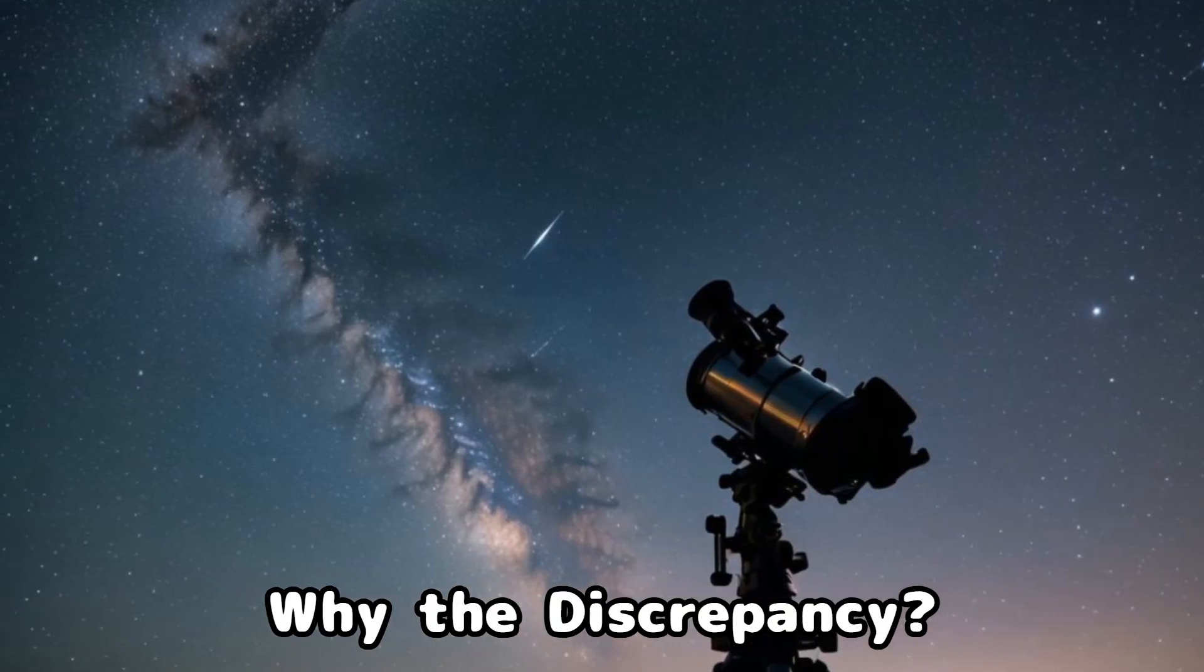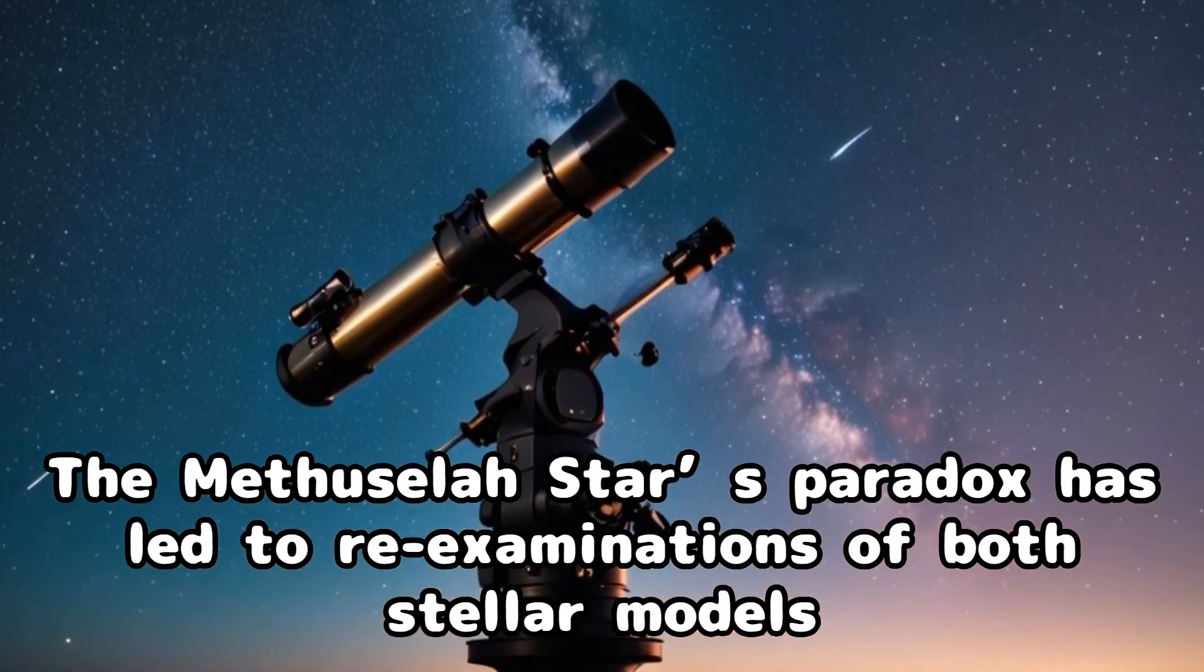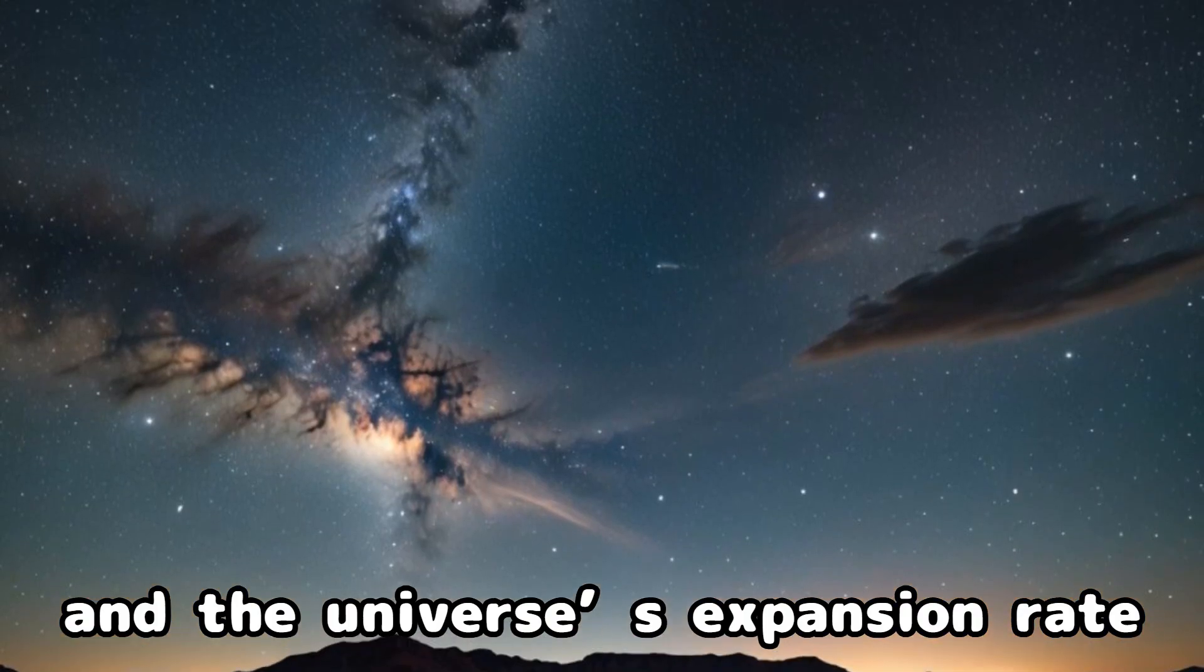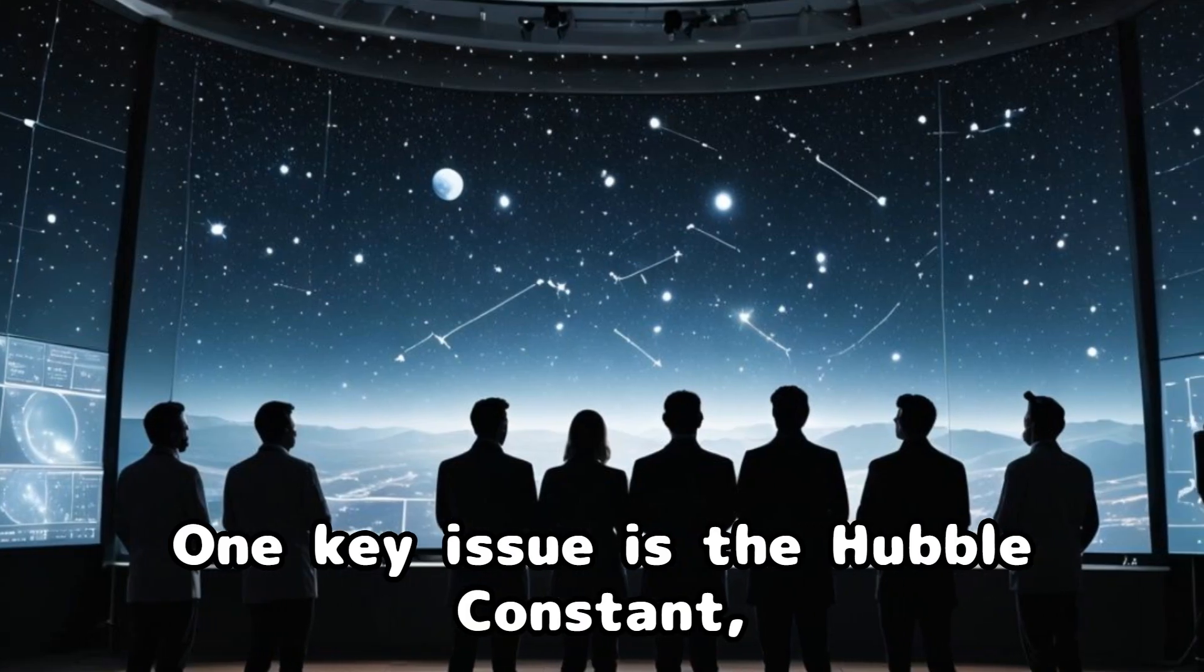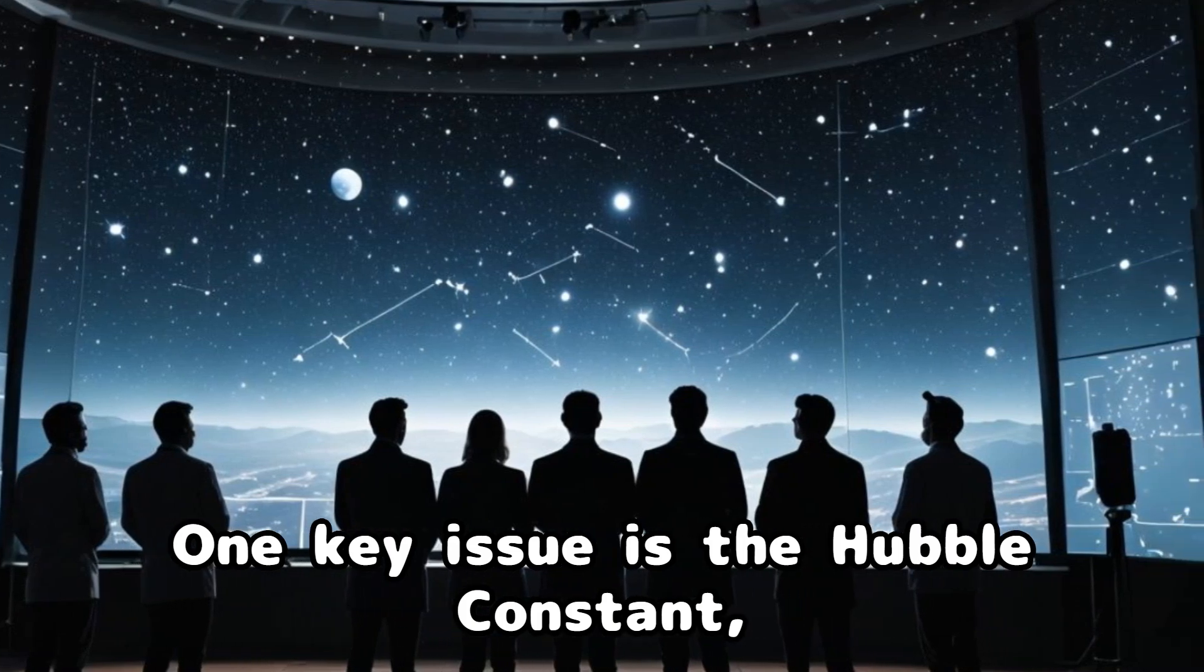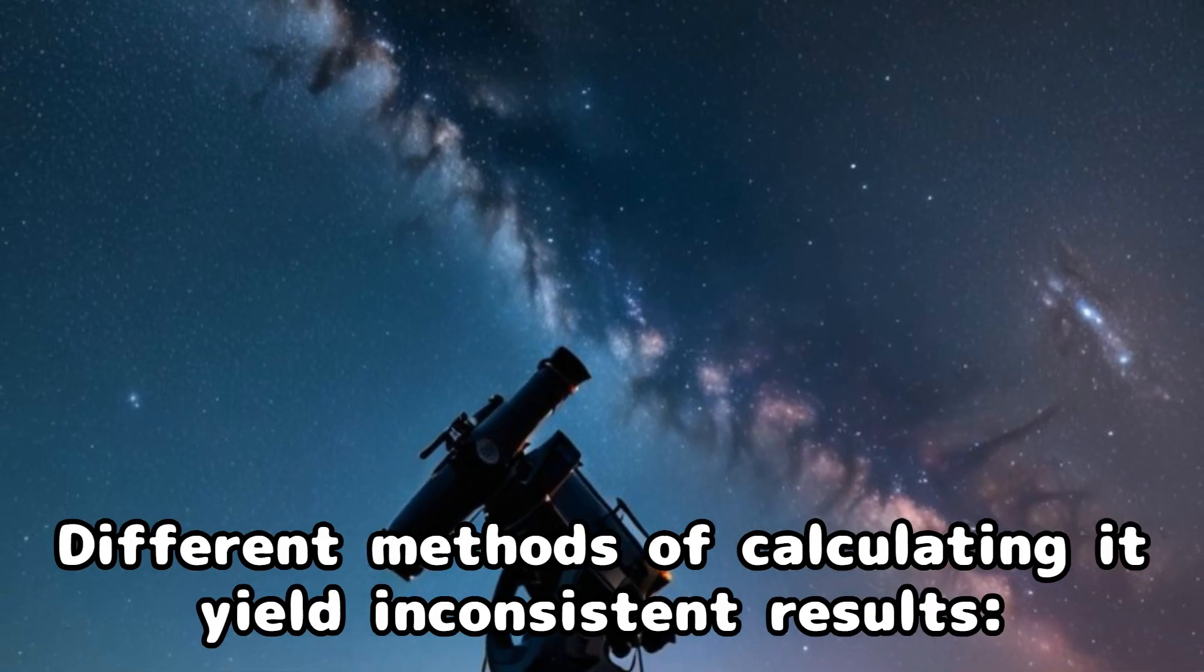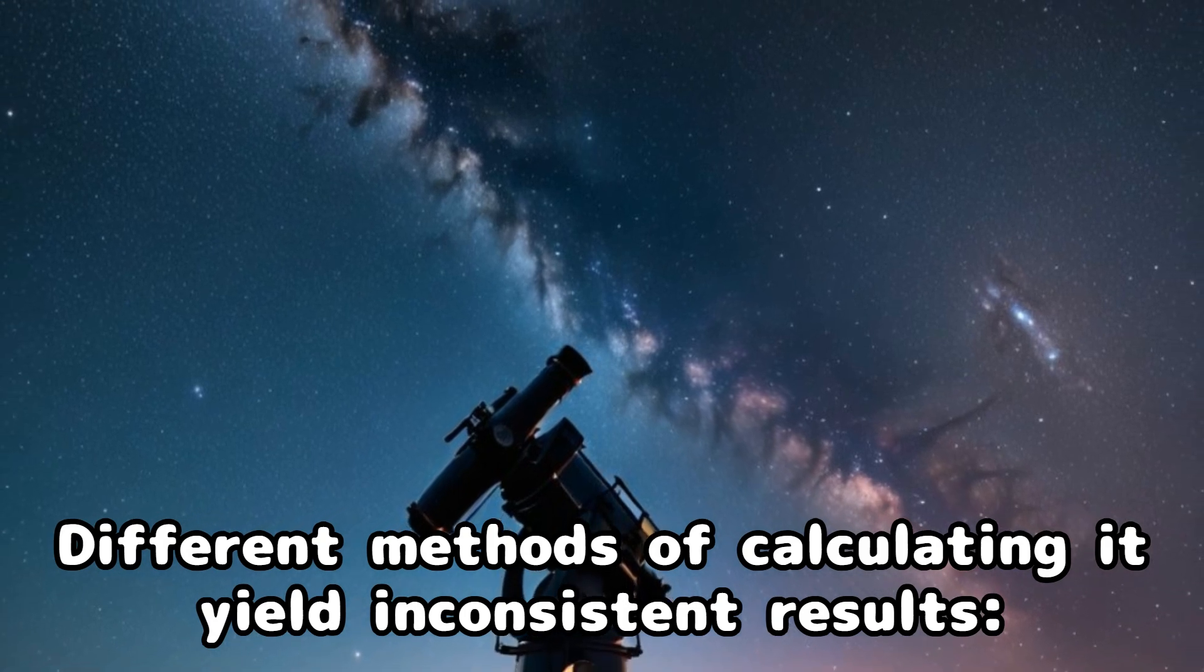Why the discrepancy? The Methuselah star's paradox has led to re-examinations of both stellar models and the universe's expansion rate. One key issue is the Hubble constant, which measures the universe's expansion speed. Different methods of calculating it yield inconsistent results.